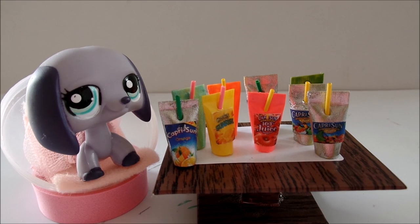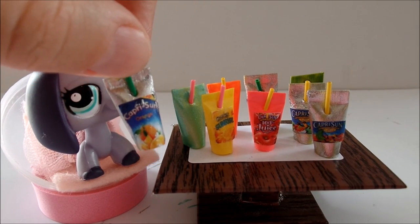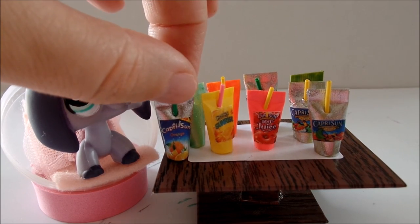In this tutorial we're making tiny drink pouches for LPS and we'll also label them as Capri Sun.